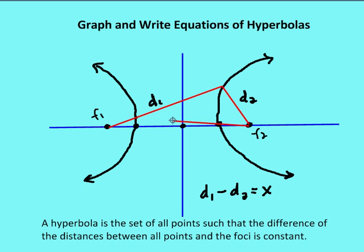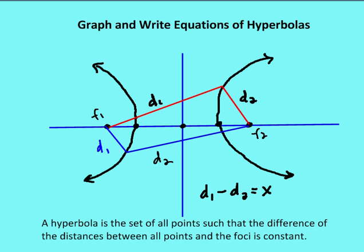If I draw another length here and call this d2, then draw a length in blue and call this d1, then the difference between d2 and d1 again will be constant. So it's the absolute value of the difference between the two that is constant — that's the definition of a hyperbola.